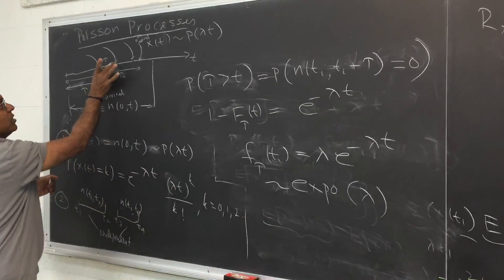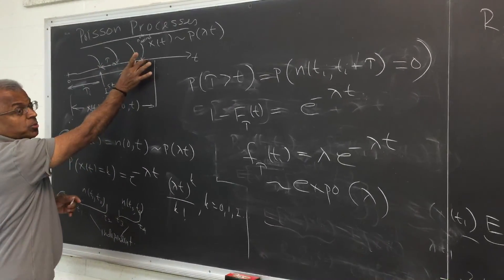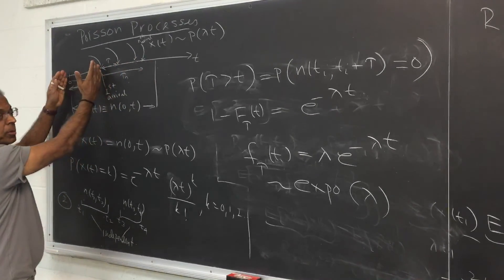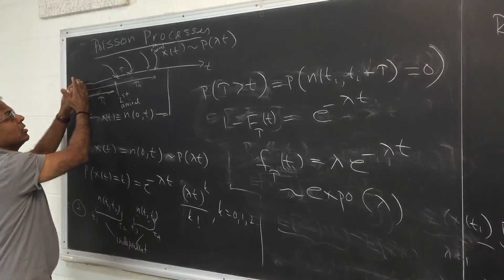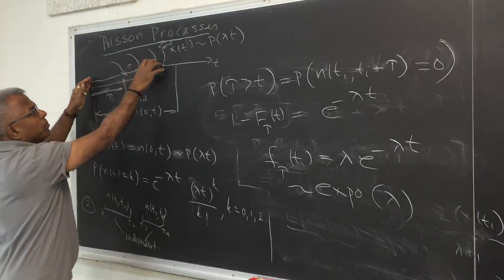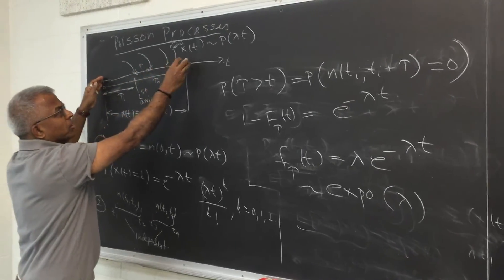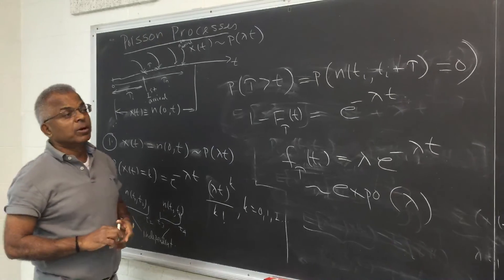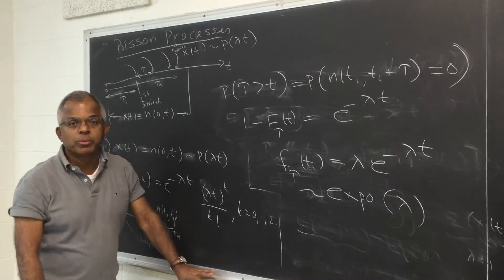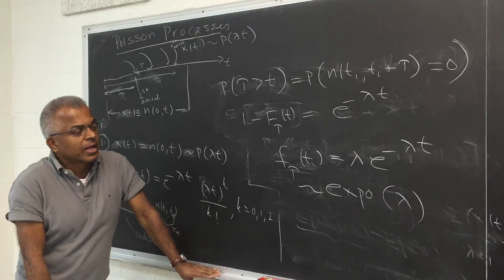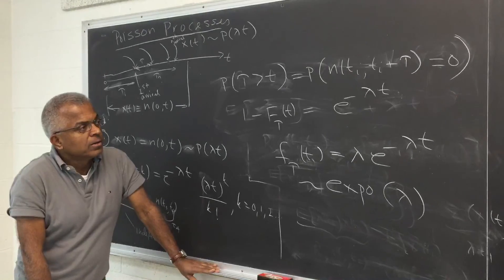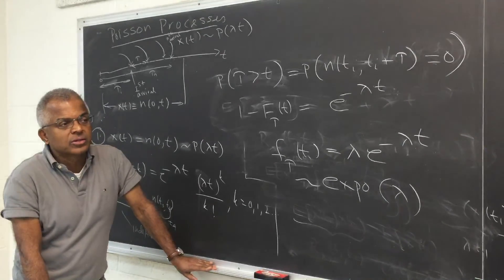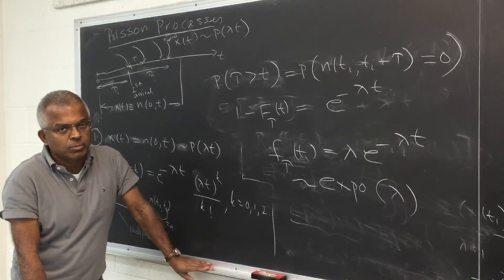So each of the inter-arrival distributions is exponential. The first arrival is exponential, and when you add up n independent exponentials you get a gamma distribution with parameters λ and n. So whichever way you look at it you get the same result. You can then find the mean, variance, etc. for that random variable.